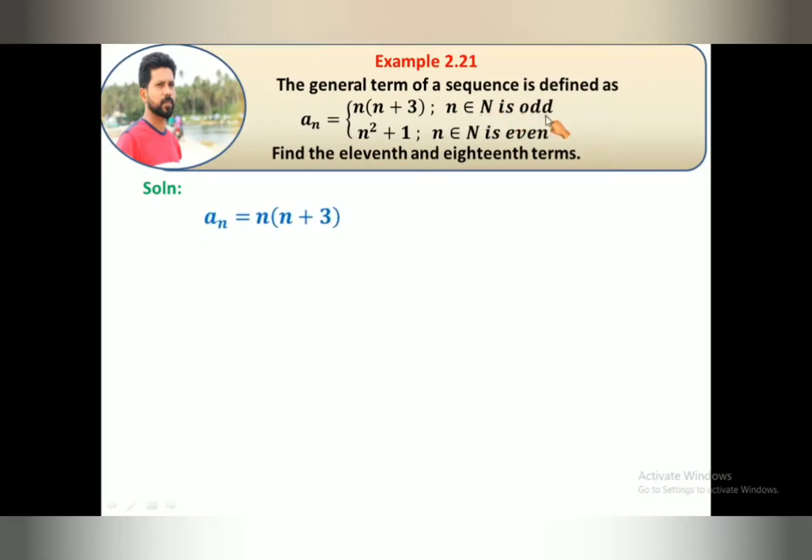11 is an odd number. For odd numbers, we use n(n+3) in the general term. So to find the 11th term, we will substitute n = 11. a_11 = 11(11+3) = 11(14) = 154.